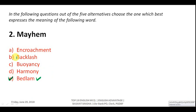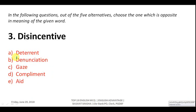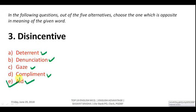Question three: find the opposite of 'disincentive.' A disincentive is a deterrent or discouraging factor. Denunciation means criticism, gaze means to see, compliment means to praise. The correct opposite of disincentive is aid or support — answer E.